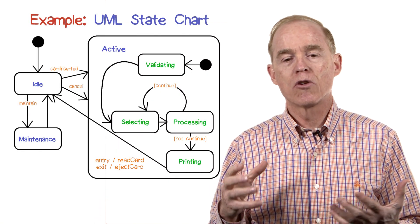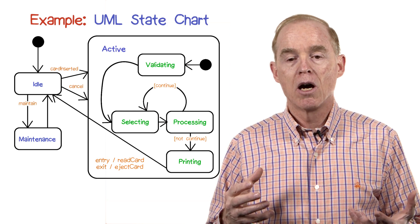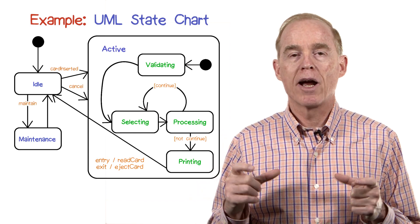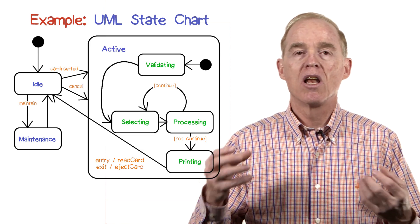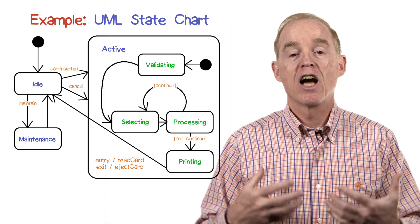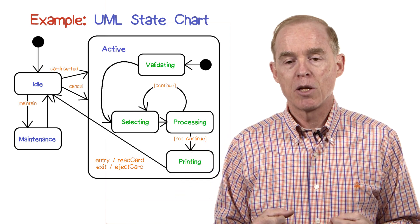Another thing to note here is that two of the transitions in the nested machine in the active state are labeled with text inside of square brackets. These are data conditions—they are tests, logical expressions on the attributes of the object which is being represented by this particular state machine.